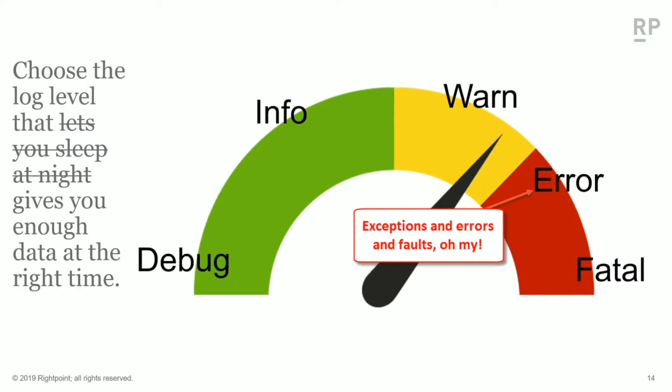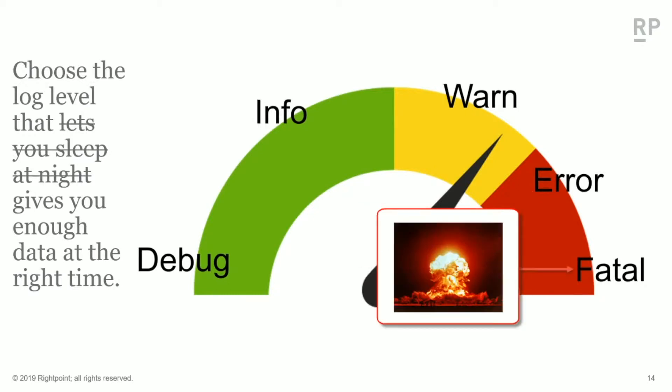Errors, perhaps obviously, are for when you have errors, when you have exceptions. You should always be logging the stack trace - always put those into the code whenever there's problems. And fatal - we rarely use fatal, but that's for when things are absolutely upside down and you cannot recover. That's for super bad situations.